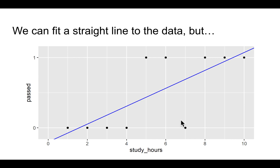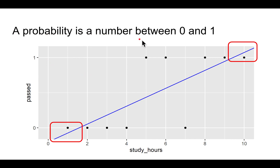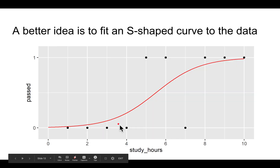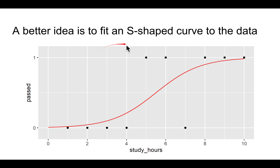Anyhow, you can fit a straight line to this data like so. However, this is not really a good idea, because a probability is by definition a number between 0 and 1. And you notice right here and right here the probabilities are bigger than 1 or less than 0, which doesn't make sense. Instead of trying to fit a straight line, a better idea is to fit an S-shaped curve to the data. As study hours increases, the estimated probability of passing also increases. The goal is to have higher estimated probabilities for observations where the student passed, and low estimated probabilities for observations where the student failed. Sometimes low probability events do happen, or high probability events don't happen, but we fit the best curve that we can to the data.